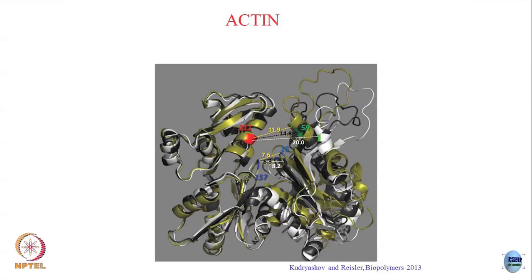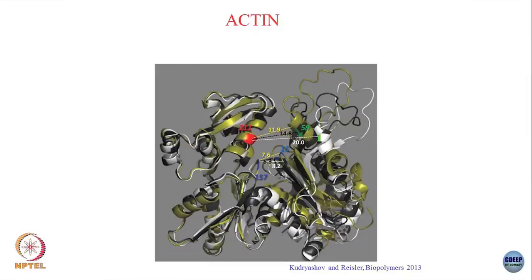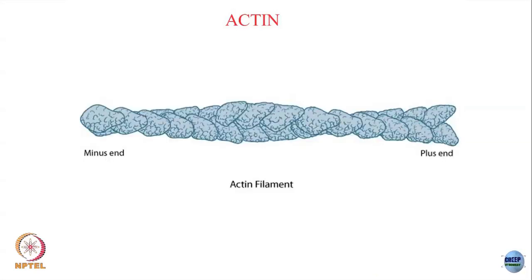So you have G-actin which can exist in two states — ATP or ADP — consistent with two conformational states, open or closed. It then assembles to form a filament. This filament has structural polarity with a plus end and a minus end. These are two strands intertwined with each other giving rise to a helical pattern. The two ends look structurally different — one end is called the plus, the other is called the minus.